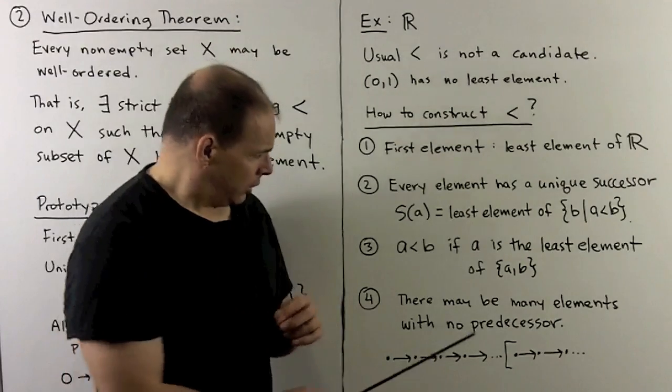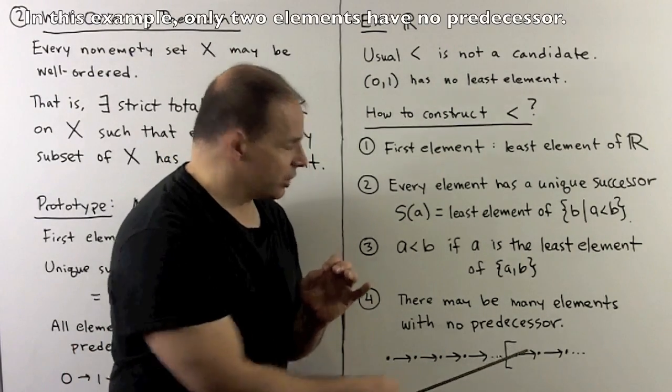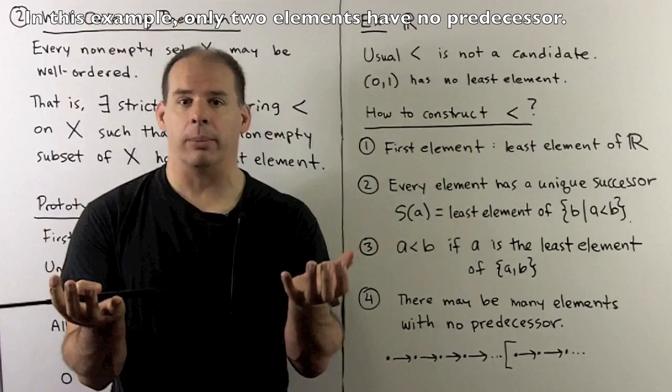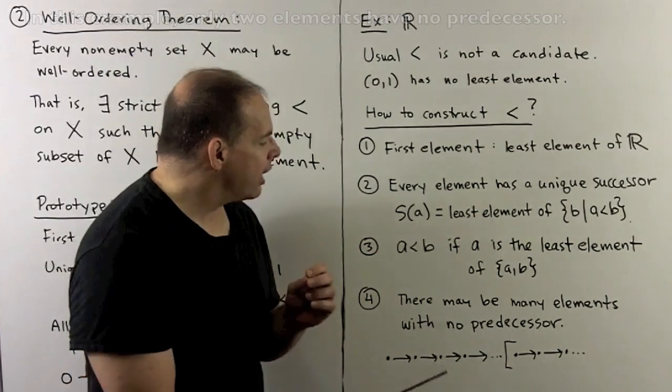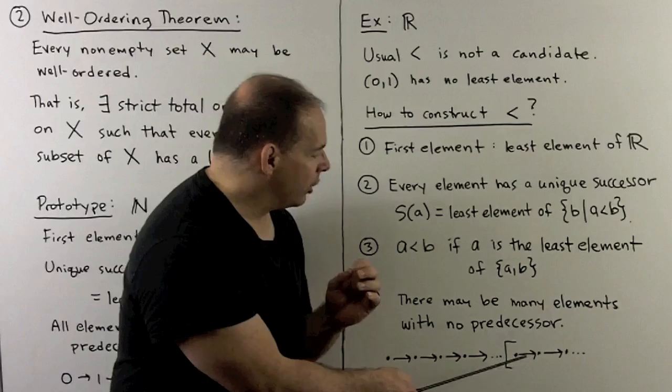For the simplest picture where there are many elements without predecessors, we could take two copies of the natural numbers, put the usual ordering on each piece, then I would say every element on the left is less than every element on the right.